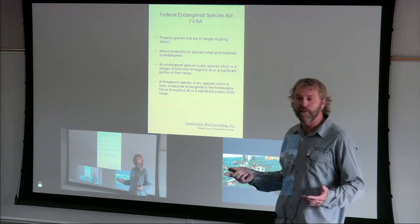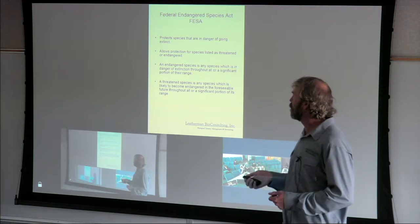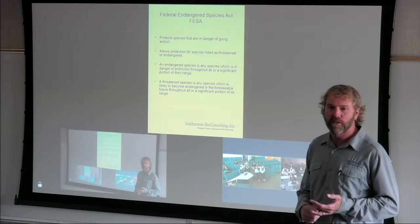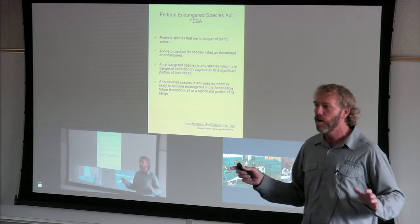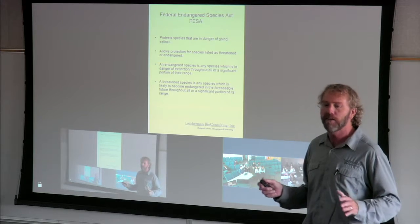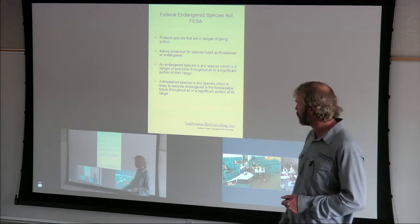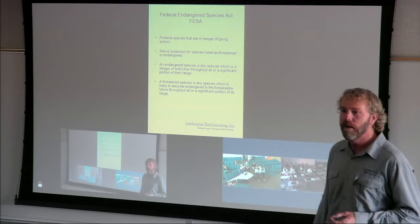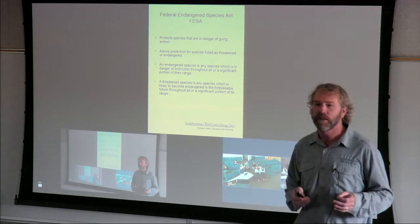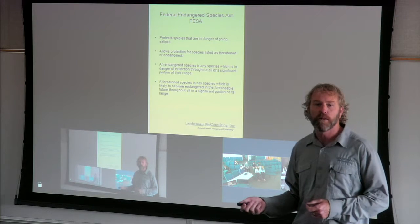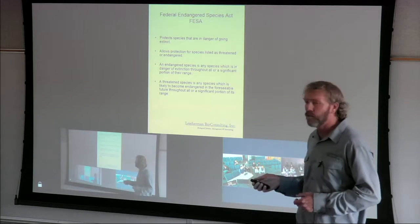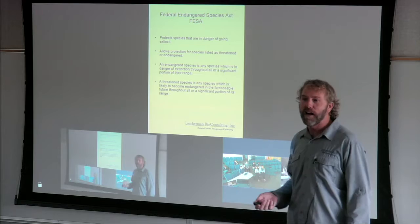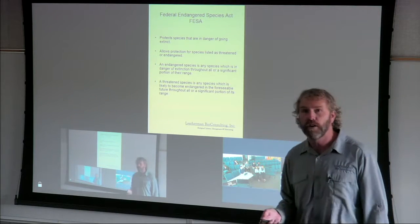An endangered species is any species that is in danger of extinction throughout all or a significant portion of its range — it's on the brink right now. A threatened species is any species likely to become endangered in the foreseeable future — we've identified species that, if we don't act now, will become endangered. So we have two levels of threat: endangered species might go right now; threatened species might go in the future if we don't address them.